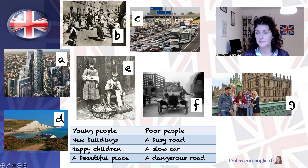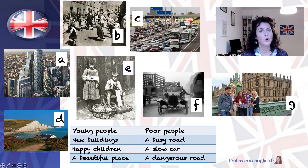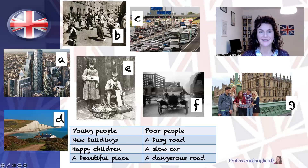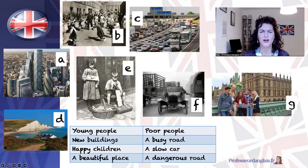You can see young people in G, or some young people in E and B. What about poor people? Can you find poor people? Picture E — you can see some poor people. How about new buildings? That's certainly picture A. We have some new buildings. What about a busy road? Here in picture C, you can see that it's a busy road. Also in picture F, that road looks quite busy as well.